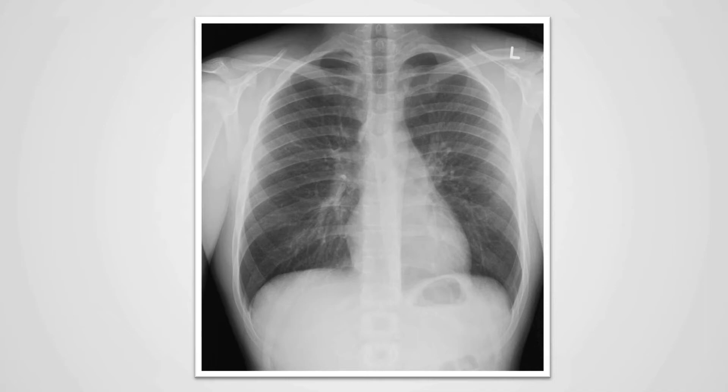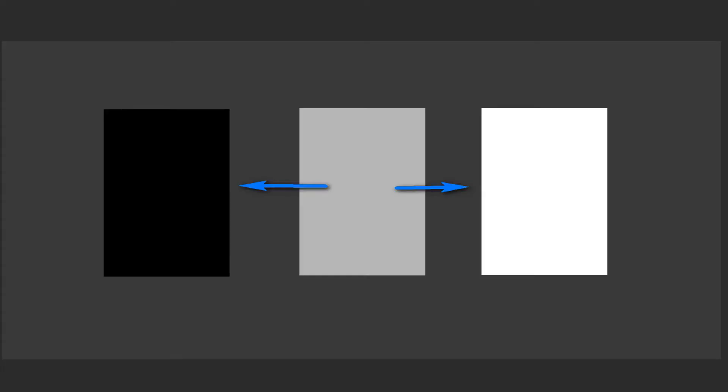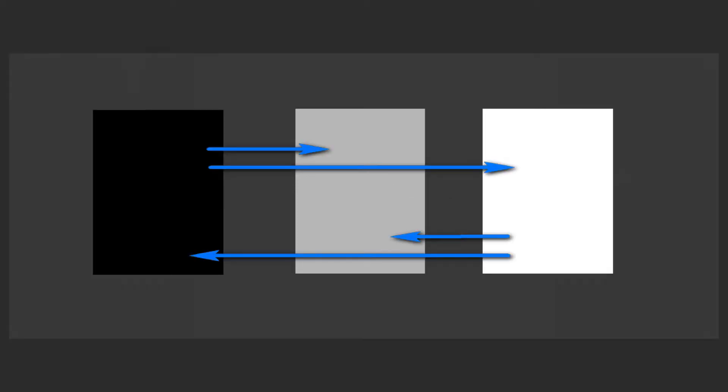When pathology occurs in the thorax, the pathology causes the normal gray scale of the chest x-ray to change in several ways. A normal gray structure can become too black or too white. Or a normally black structure can become gray or too white. Or a normally white structure can become gray or too black.